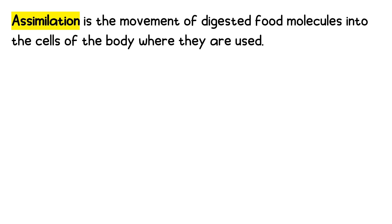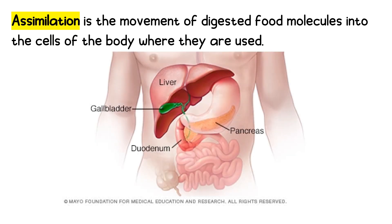Assimilation is the movement of digested food molecules into the cells of the body where they are used. The liver is most important in assimilation. For example, glucose is used in respiration to provide energy, and amino acids are used to build new proteins.